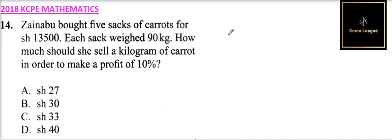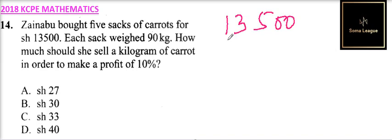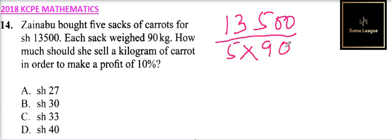First of all, let's find out how much she was buying for a kilo. The amount is 13,500, you divide by five sacks, and each sack had 90 kg. So you calculate and divide by that.